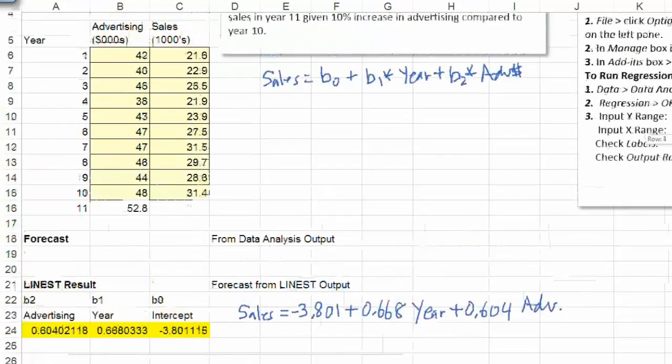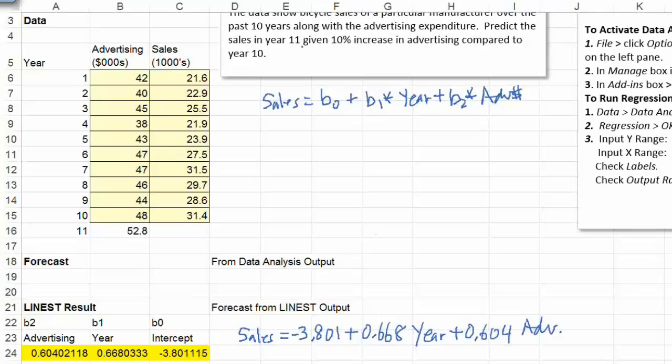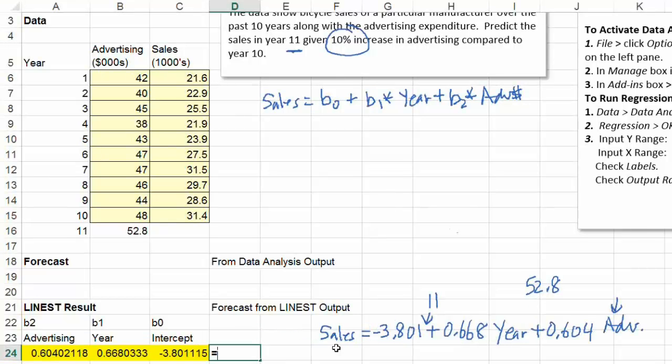So now it says here, predict the sales in year 11, given 10% increase in advertising compared to year 10. So I already have this number here, 11, and 10% more than this. So now 48, and then 10% more is 52.8. That's how much we're going to spend on advertising in year 11. So here's the year. So I plug in here, 11, and then 52.8. I plug it in here, 52.8. So that times that plus 11 times this, and then minus 3.801, and that gives me my forecast. So sales was this number, plus 0.668 times year 11, and then plus 0.604 times the advertising amount, and that gives us 35.4396.